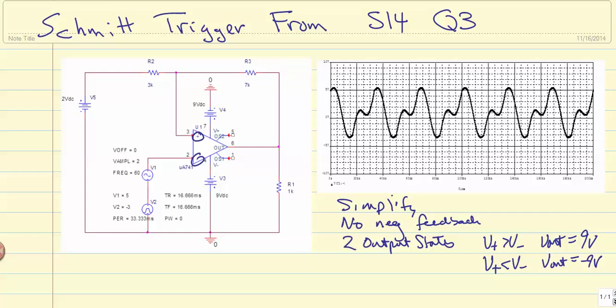But generally just keep it simple and just say the assumption is that it will go all the way to the output voltage. So we have two possible states for the output.